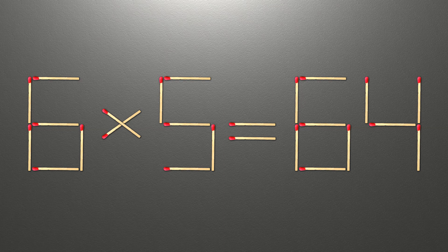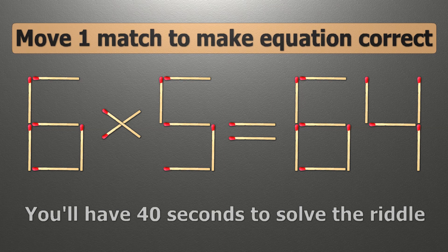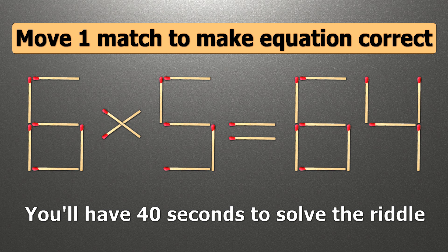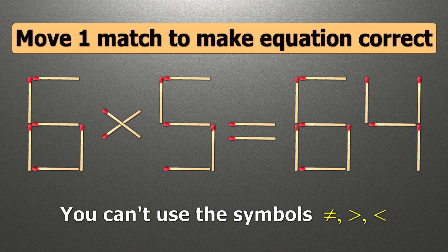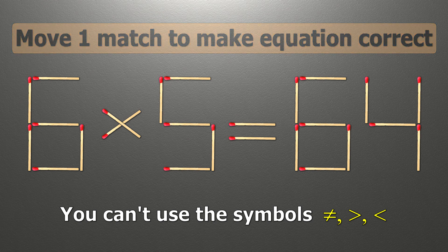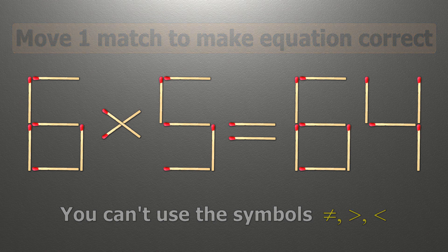Hello! We have the equality 6 times 5 equals 64. Our equality is wrong. We need to move one match to make our equality correct.